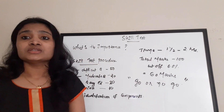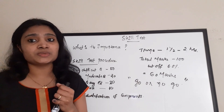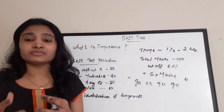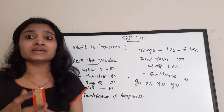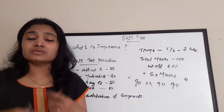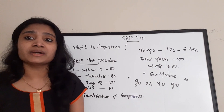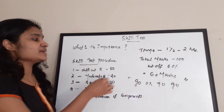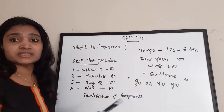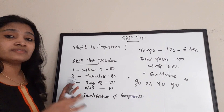Moving on to the procedure: in general semester examinations we do some basic, difficult, and simple experiments — generally only one experiment. But here you may have to do more than one experiment. Just like semester exams include basic, tough, and easy experiments followed by a viva, here you sometimes have to do various experiments of various difficulty levels.